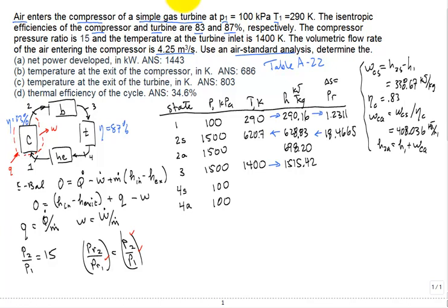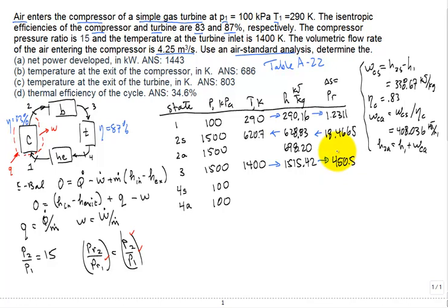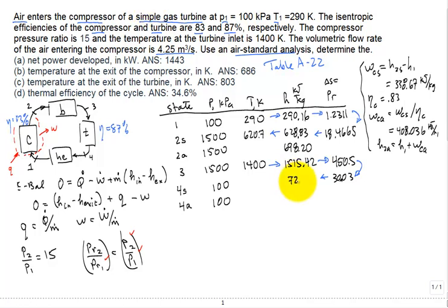For the turbine, we use Table A22 at 1400 K to get PR3 = 450.5. Since the pressure drops by a factor of 15 across the turbine, PR4s = 450.5 / 15 = 30.03. Interpolating in Table A22, the isentropic exit enthalpy is h4s = 721.68 kJ/kg.